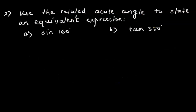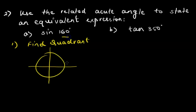The next question says: use the related acute angle to state an equivalent expression. The steps are the same as those learned previously. First step is to find the quadrant in which the angle lies. In the unit circle: 0 to 90 is the first quadrant, 90 to 180 is the second, 180 to 270 is the third, and 270 to 360 is the fourth. This angle is 160 degrees, so we are in the second quadrant.